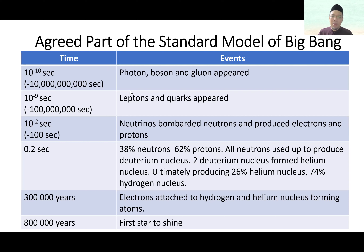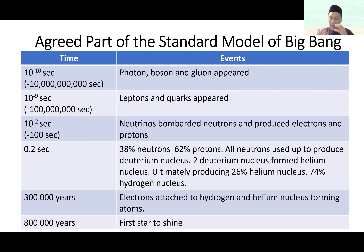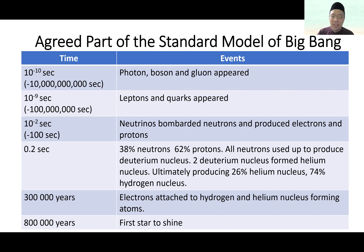That is basically what happened during the early moments of the Big Bang. This is called the agreed part of the standard model of the Big Bang — agreed by almost all astrophysicists and scientists, according to calculations proved by experiments such as particle bombardment. According to this model, the first star started to shine about 800,000 years after the Big Bang.